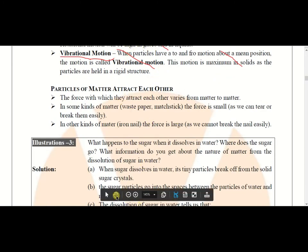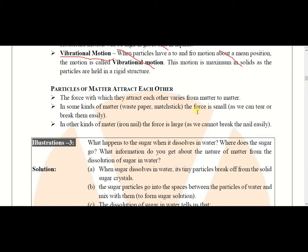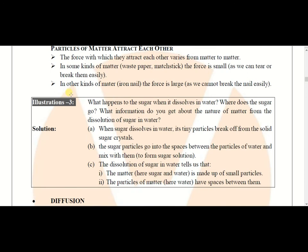Particles of matter attract each other. The force with which they attract each other varies from matter to matter. In some cases the force is very weak, and in some cases it is very strong. For example, an iron nail — we cannot easily break an iron nail because its intermolecular force is very high.